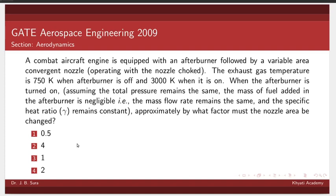When the afterburner is turned on, assuming total pressure is constant, mass of fuel added in the afterburner is negligible (that is, mass flow rate is constant), and the specific heat ratio remains constant, then approximately by what factor must the nozzle area be changed?